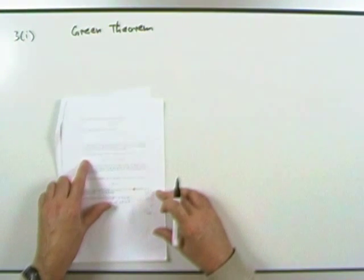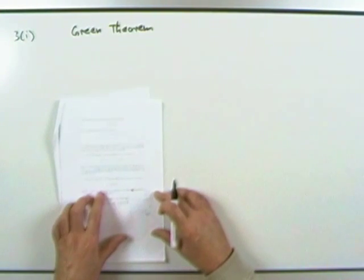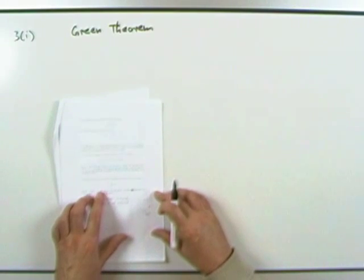State the key equation of Green's Theorem — and at the top it should say Green's Theorem with an apostrophe S.